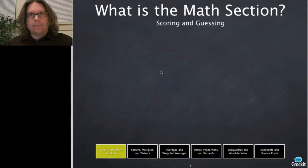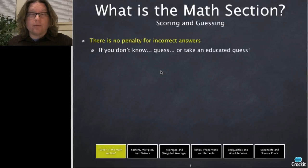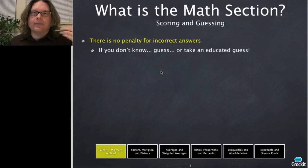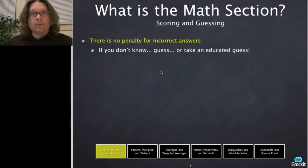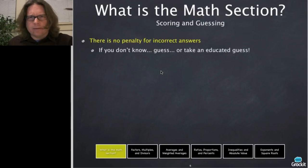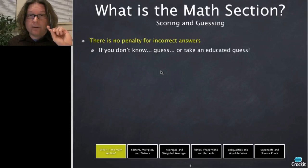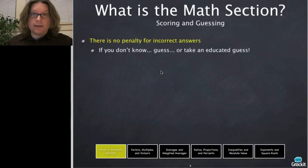Scoring and guessing: the ACT encourages you to guess. There is no penalty for guessing. Leaving a question blank gives you zero chance of getting it right, and there is no additional penalty for a wrong answer. So it is always in your best interest to guess — you at least have a chance of getting it correct. Even better is making an educated guess by eliminating answer choices.